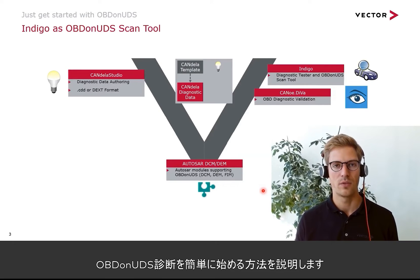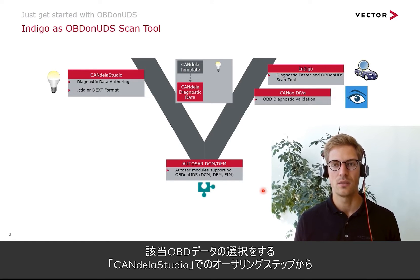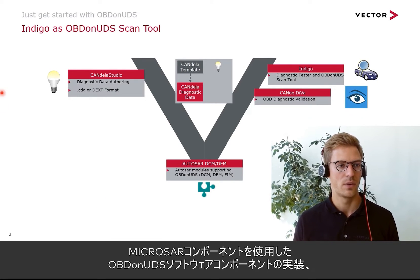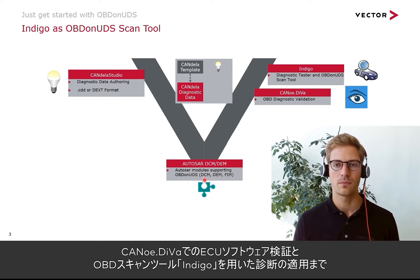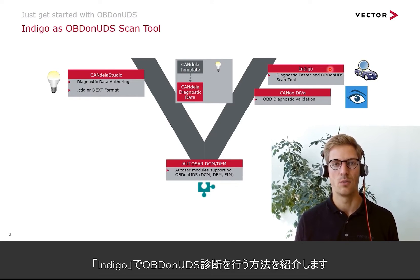So what is now the easiest way for you to start with OBD on UDS diagnostics? Vector already offers a holistic tool chain for OBD on UDS. This supports all phases of development: from selection of relevant OBD data in the authoring step with Candeela Studio, to the implementation of OBD on UDS software components with our Microsar components, to validation of ECU software with CANoe DIVa, and applying diagnostics with Indigo as OBD scan tool.